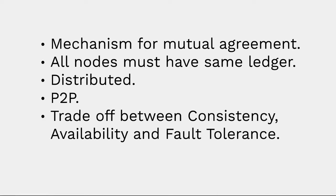When different nodes communicate with each other via peer-to-peer messages, there is a chance that a malicious node comes in between and makes changes to the messages. If this happens, mutual agreement will not be reached — therefore consensus mechanism is very important. It is a trade-off between consistency, availability, and fault tolerance. There is no single consensus mechanism that is better than another; it depends on the platform being used, and we always have to choose based on these three trade-offs.